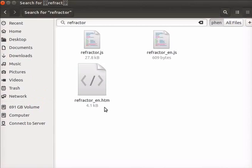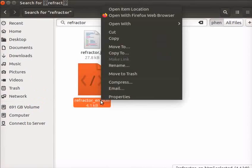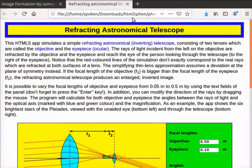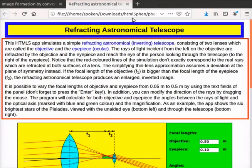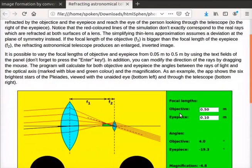To open the app, right-click on refractor underscore en dot htm file. Select the option open with Firefox web browser. The app opens with refracting astronomical telescope. Before moving to the simulation, please read the information given on the screen. Scroll down the screen.